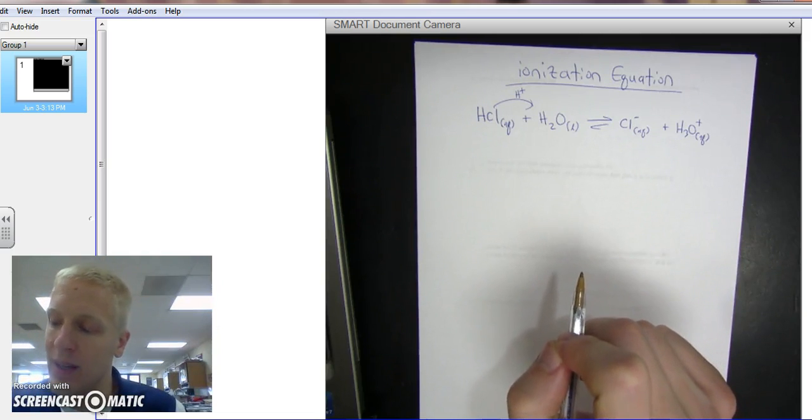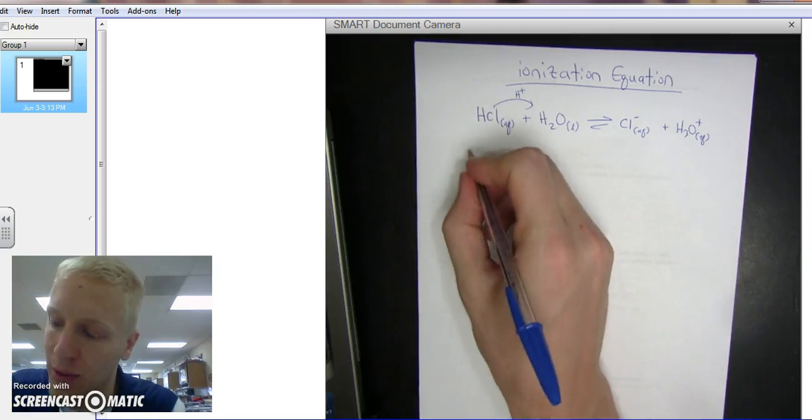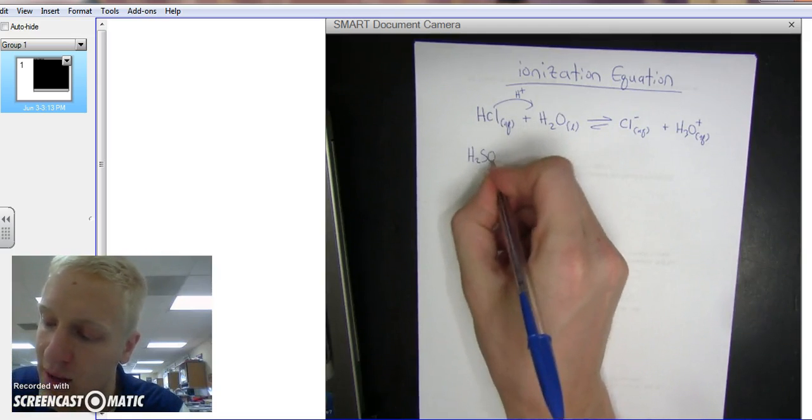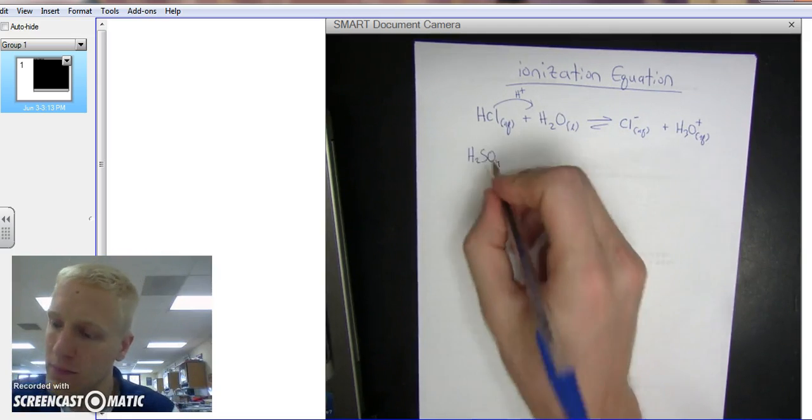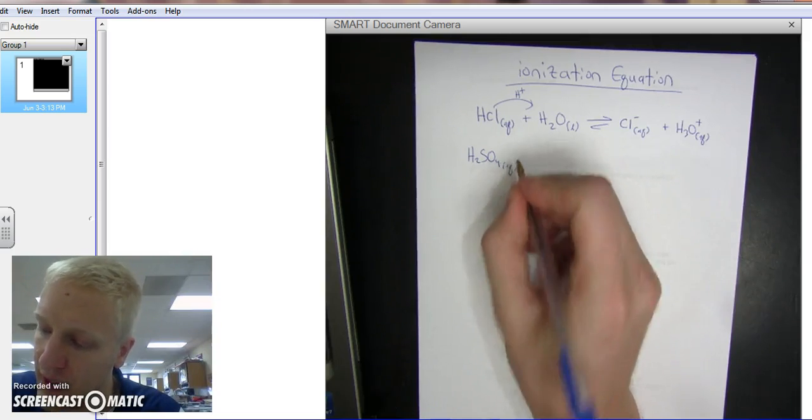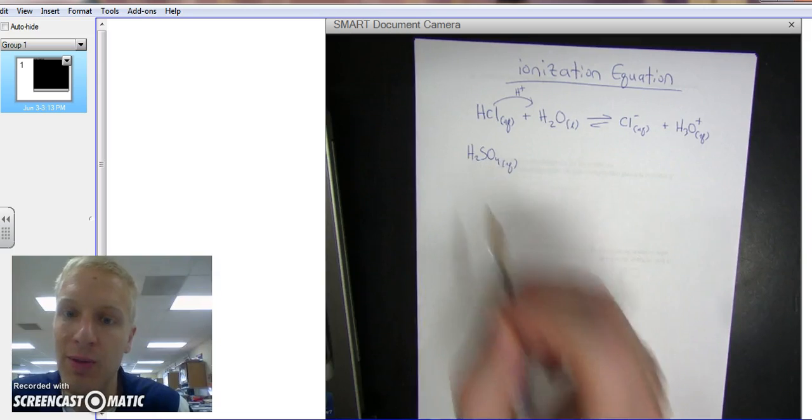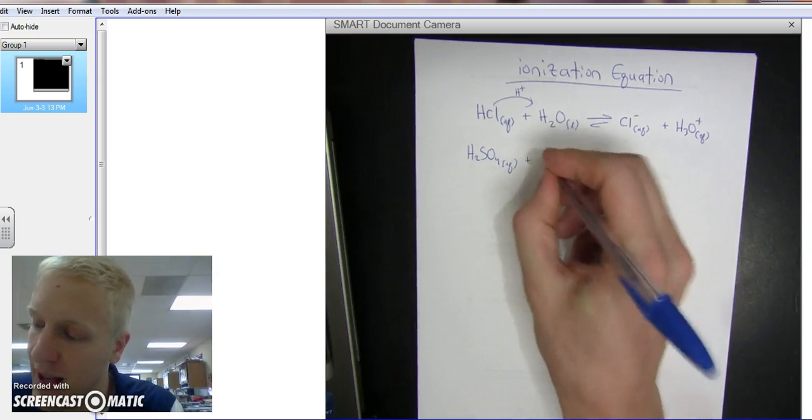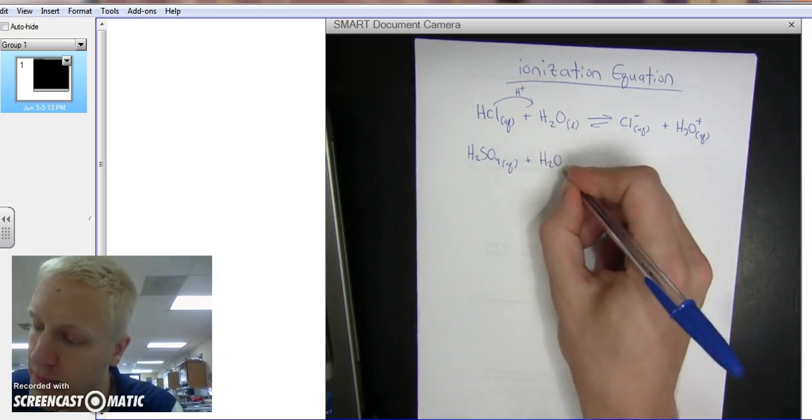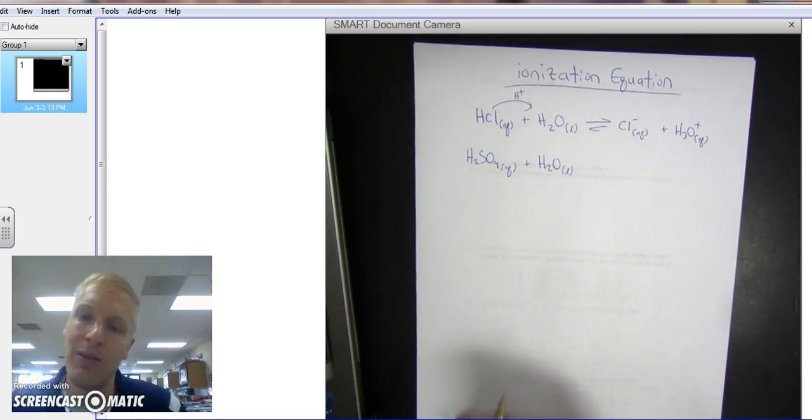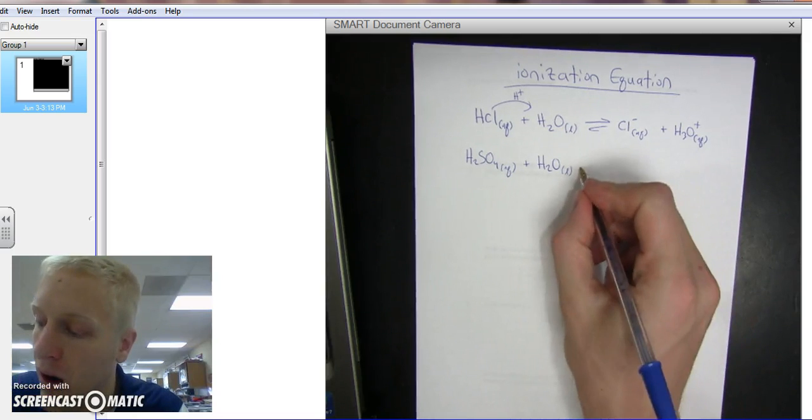What if we did something that was a little more difficult, like H2SO4? This is again an acid, but it's a diprotic acid, meaning it has two protons or two hydrogens. And if you add water to this guy, it's going to form two ionization equations, one for each proton or hydrogen it can give off.